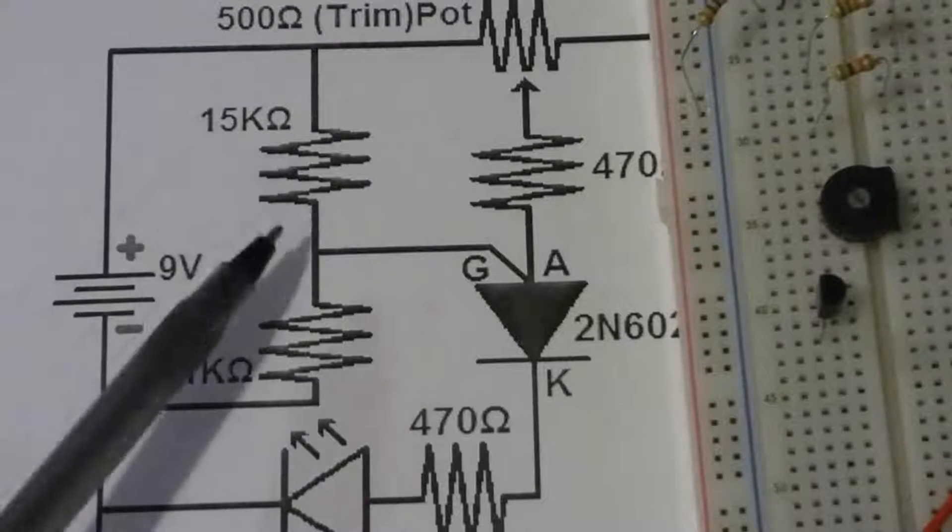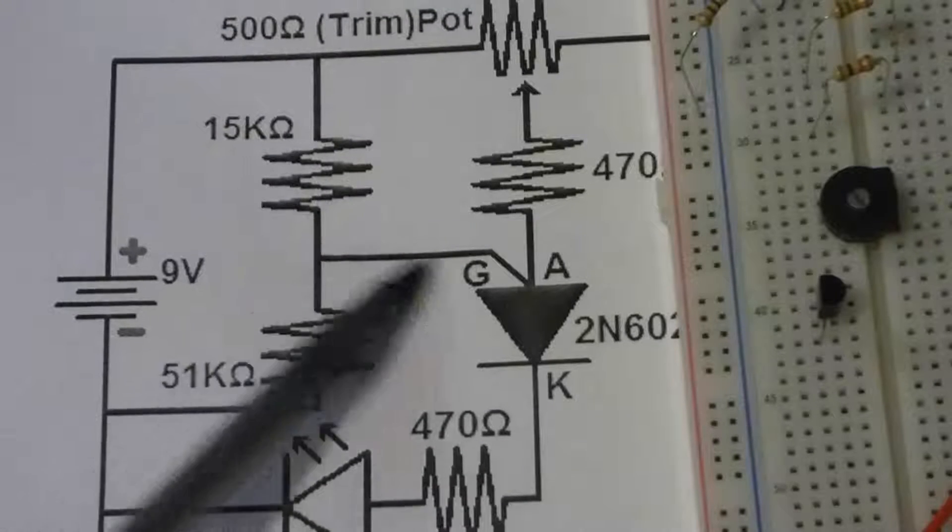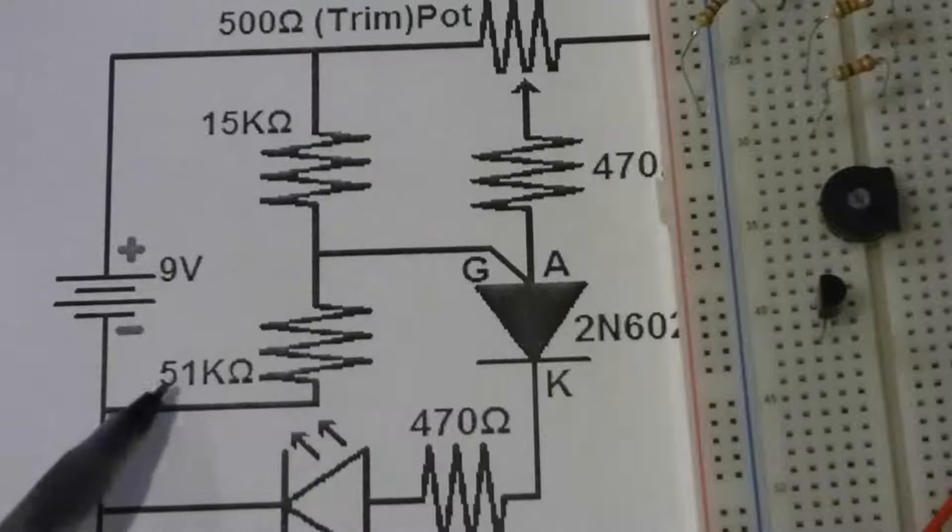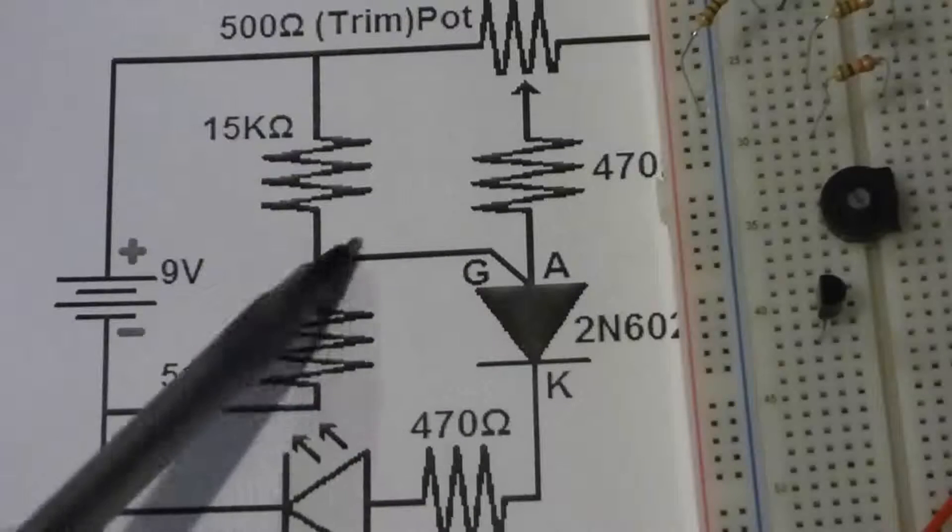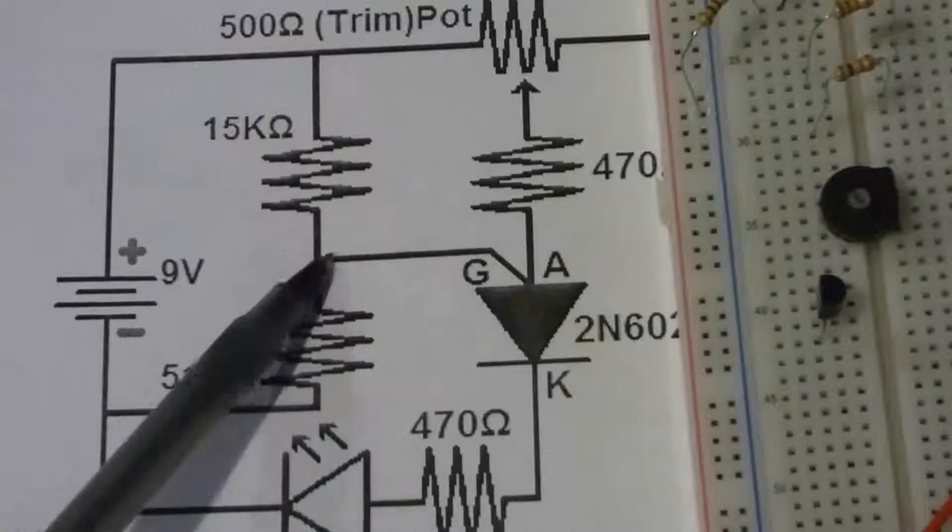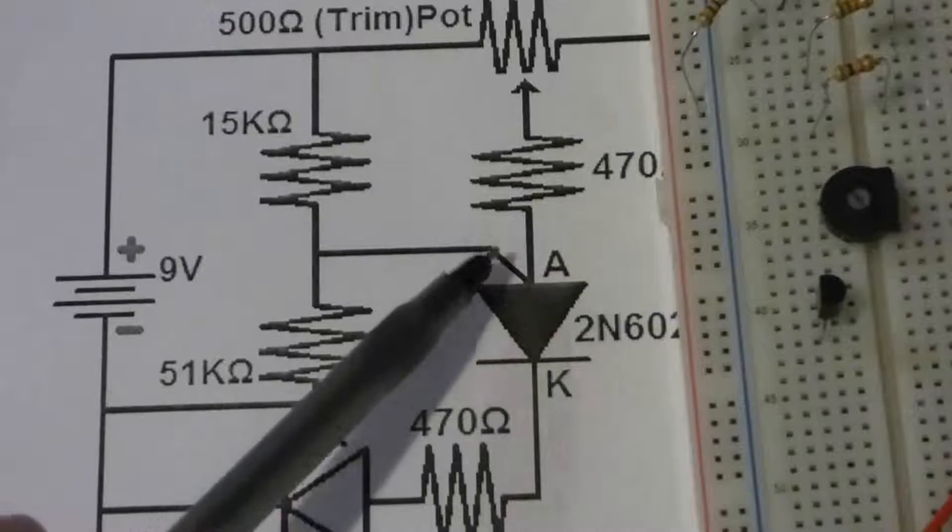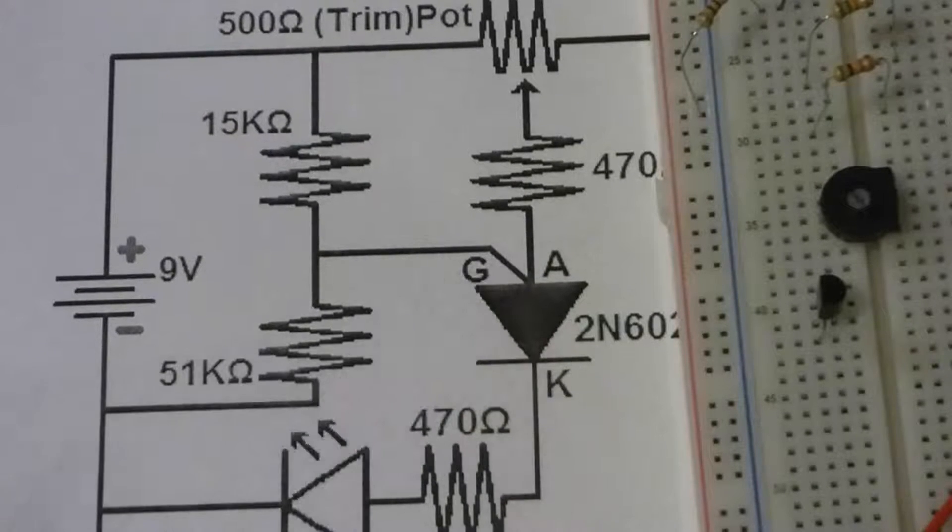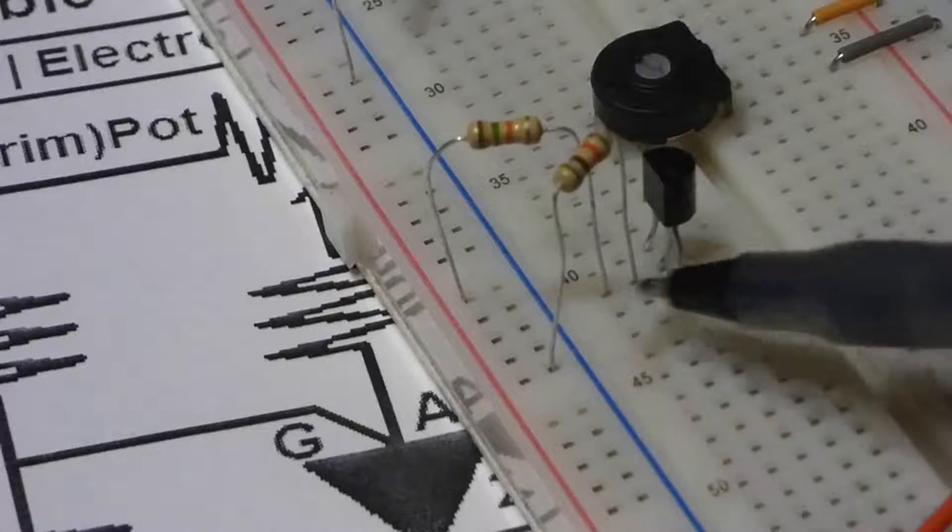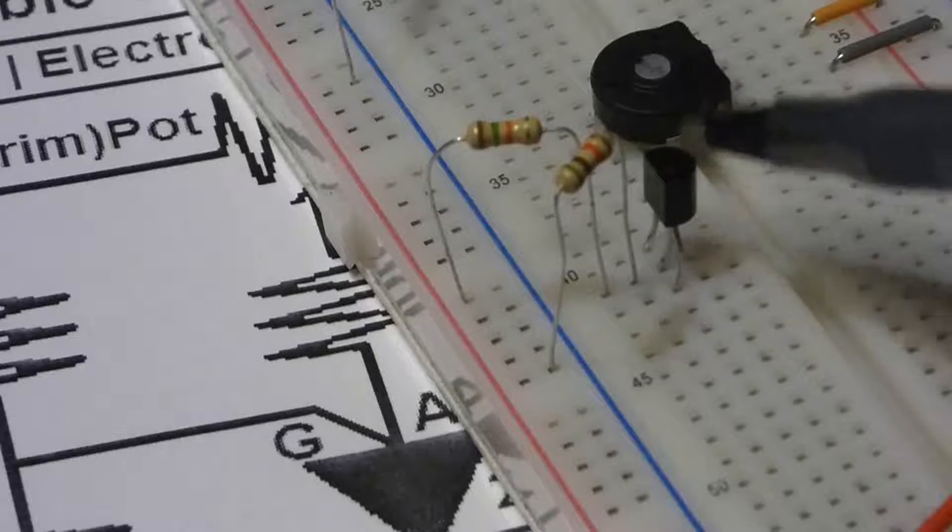So our first step: we're going to take this 15-kiloohm resistor, put it to the gate from the positive side, and then on the negative side we have a 51-kiloohm resistor to the gate. So this is a voltage divider. This will set the voltage to the gate, and that is how we program this component. And here you should be able to see I have both resistors going to the middle pin—that is the gate of the programmable unijunction transistor.